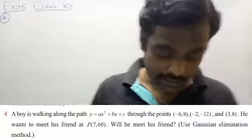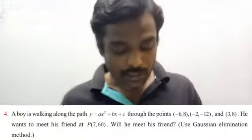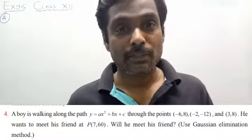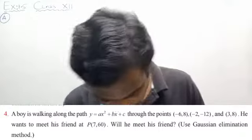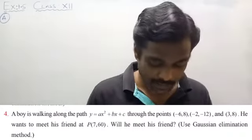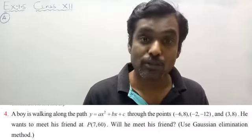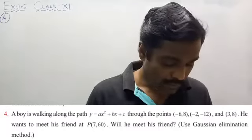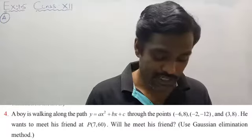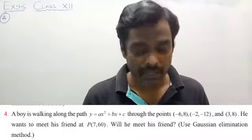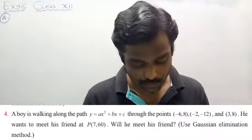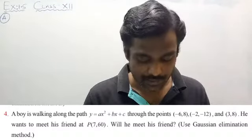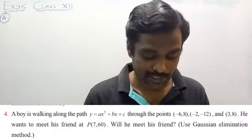I will read the question. A boy is walking along the path y = ax² + bx + c, through the points (−6, 8), (−2, −12), and (3, 8). He wants to meet his friend at point P, whose coordinates are (7, 60).